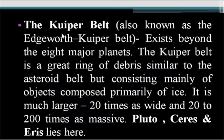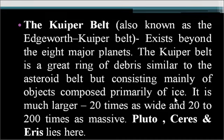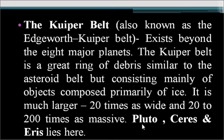Now, the Kuiper Belt. Also known as the Edgeworth-Kuiper Belt, it exists beyond the 8 major planets. It is a great ring of debris similar to the asteroid belt but consisting mainly of objects composed primarily of ice. The key difference is that the asteroid belt is found between Mars and Jupiter, while the Kuiper Belt is found beyond Neptune. It is much larger — 20 times as wide and 20 to 200 times as massive as the asteroid belt. Dwarf planets Pluto, Ceres, and Eris lie within this belt.